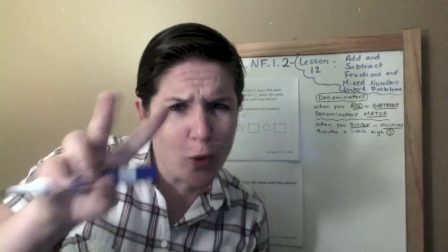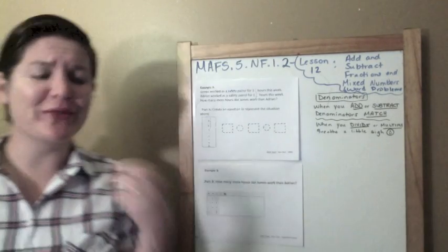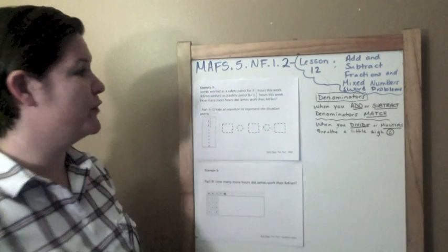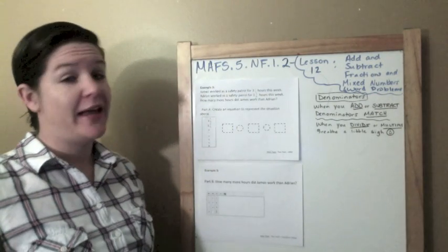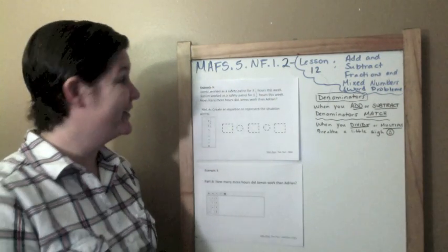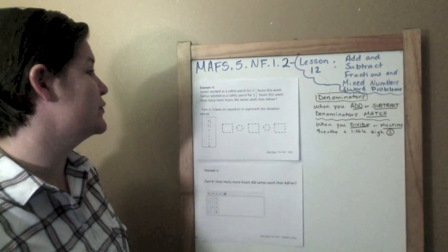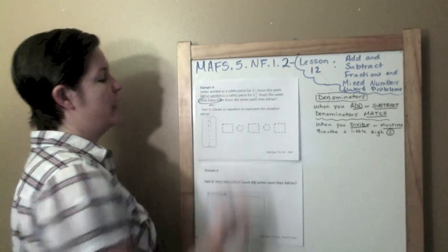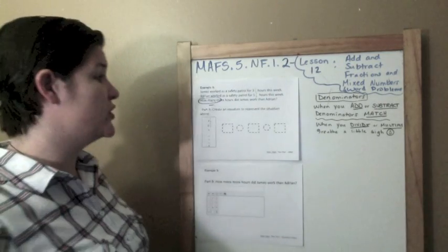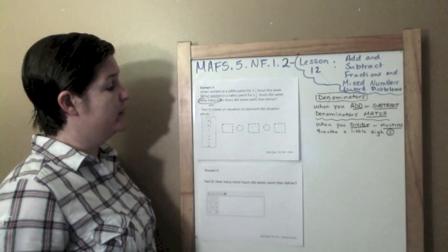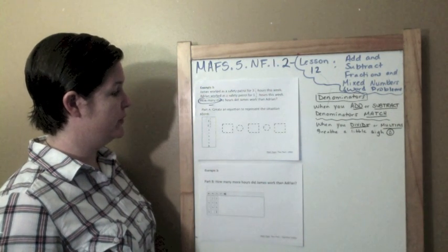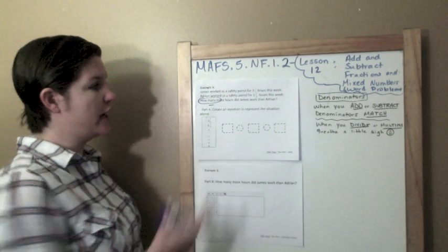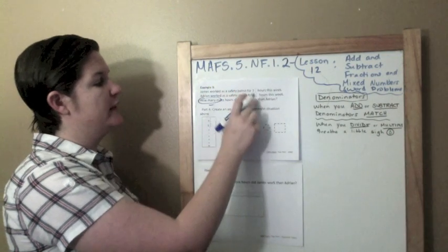Example 3. And this is a two-parter. I love two-parters. They're so much fun. James worked as a safety patrol for 3 and 1/3 hours this week. Adrian worked as a safety patrol for 1 and 2/5 hours this week. How many more - that means that I'm subtracting. Part A says create an equation to represent the situation above.